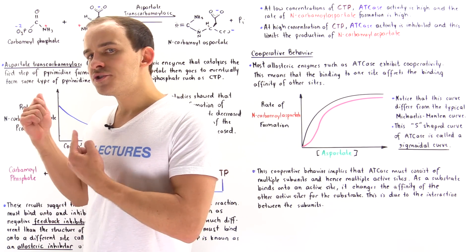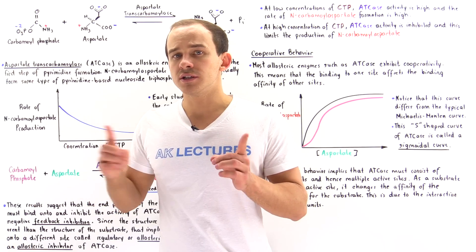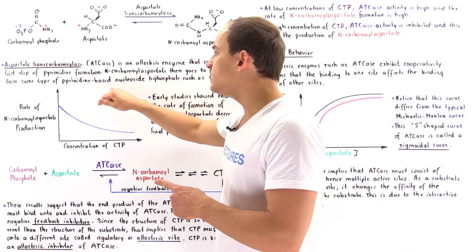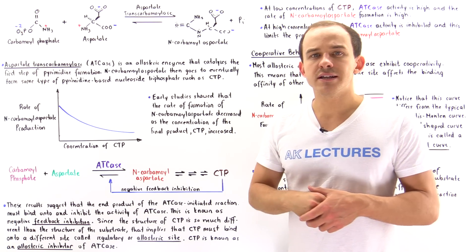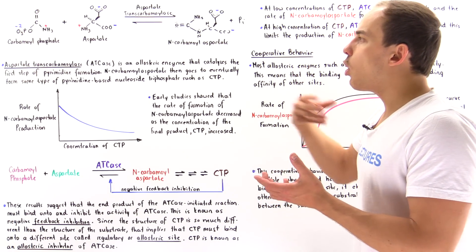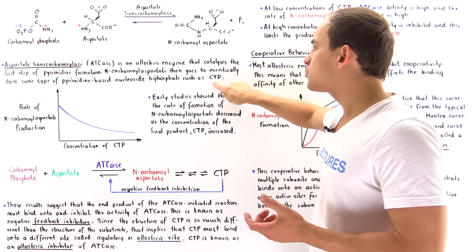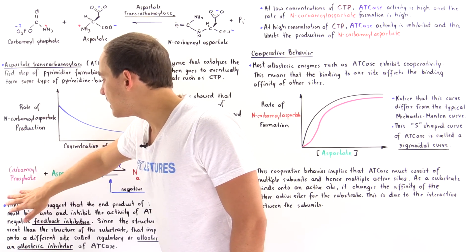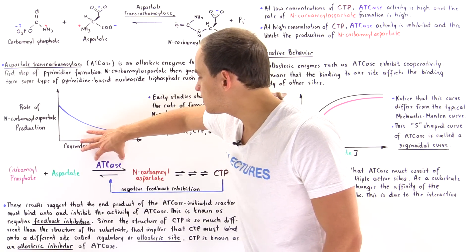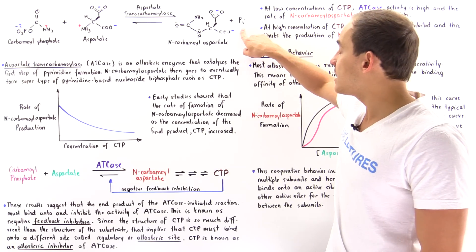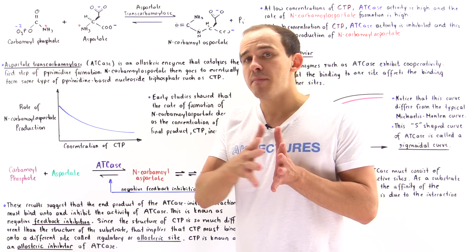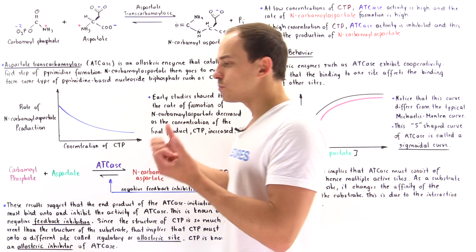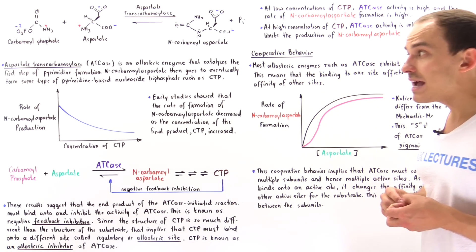As it turns out, this reaction is actually the first step in the very long biological synthesis of nitrogenous bases — pyrimidine bases. These pyrimidines are used to produce pyrimidine-based nucleoside triphosphates, such as cytidine triphosphate, or simply CTP. So the carbamoyl phosphate reacts with aspartate in the presence of this enzyme to produce N-carbamoyl aspartate, which then reacts many times to ultimately form CTP. These nucleoside triphosphates are used to build DNA molecules inside our body, so this reaction is a pretty big deal.